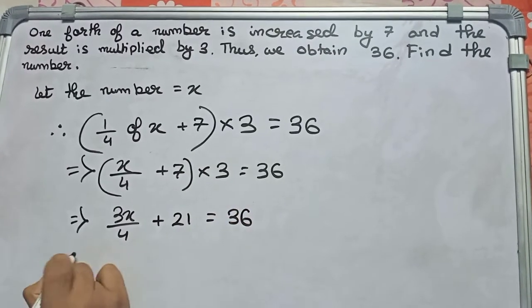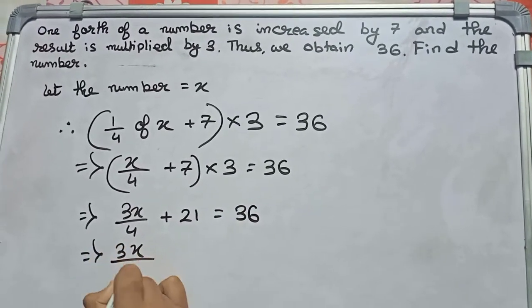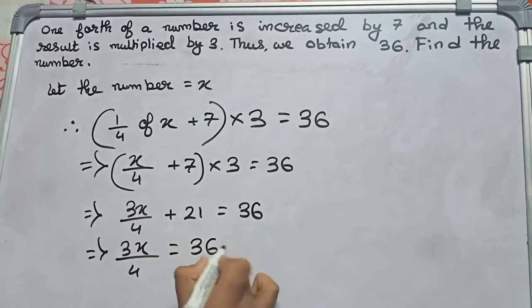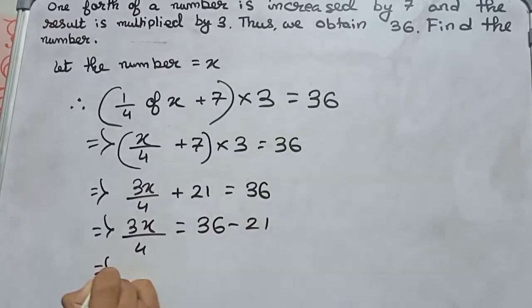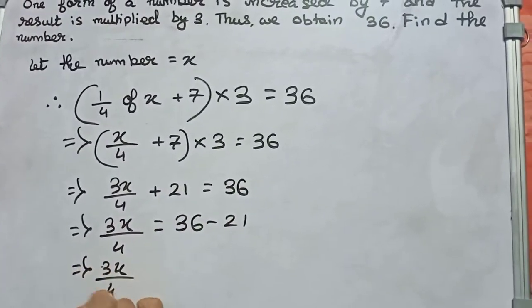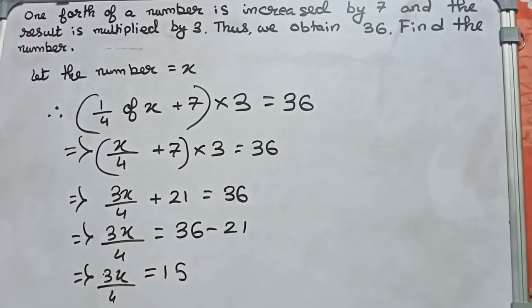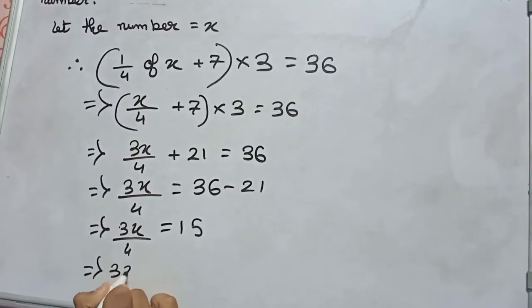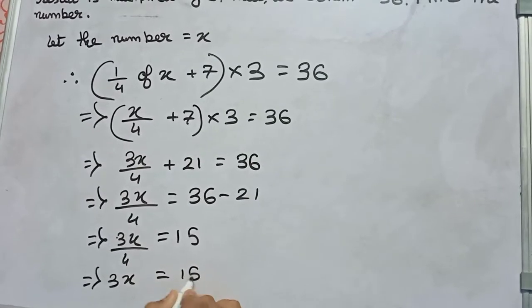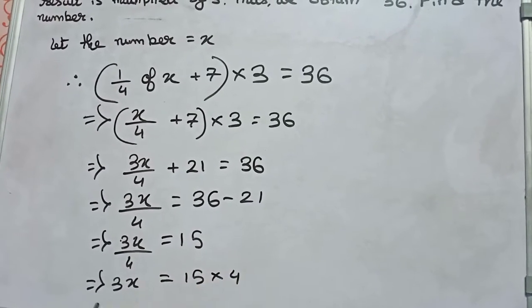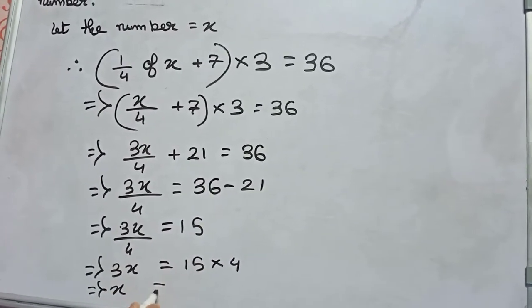Therefore, 3x/4 equals 36 minus 21, or 3x/4 equals 15, or 3x equals 15 into 4.